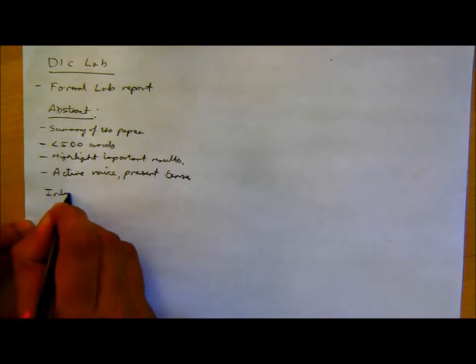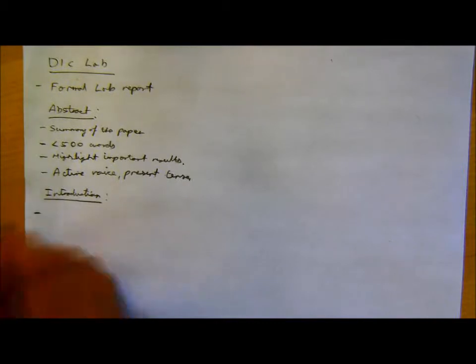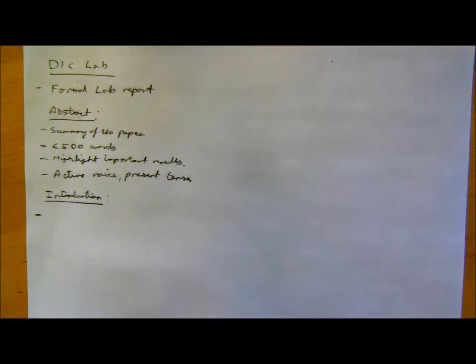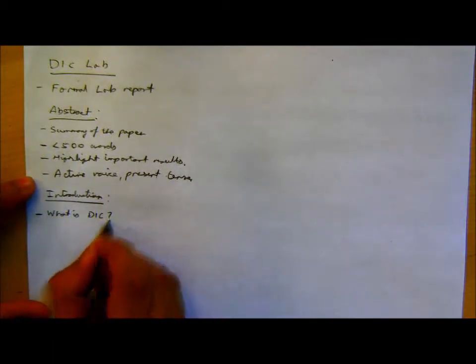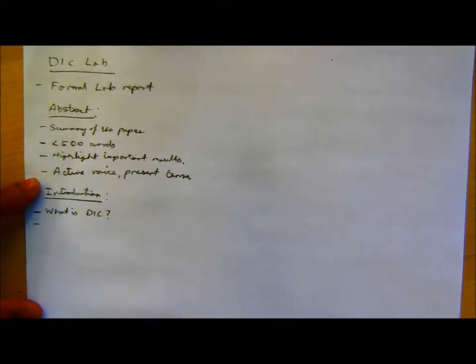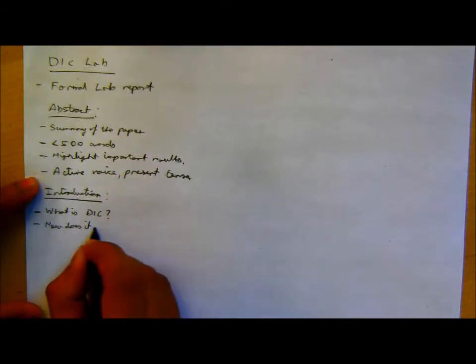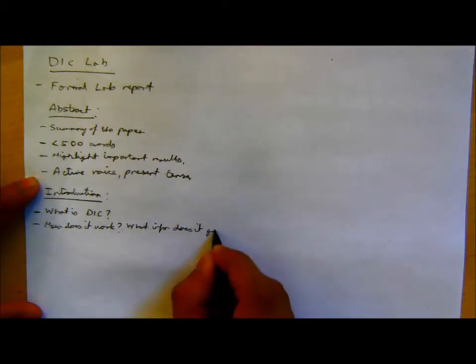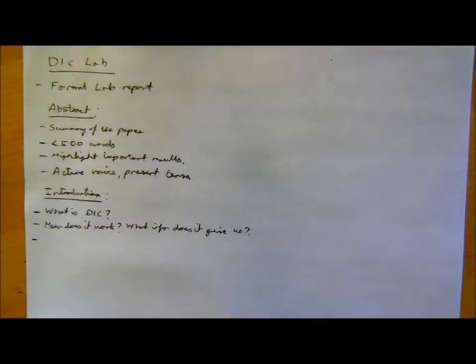Introduction. So there are three or four specific things we are looking for in the introduction. First is just introduce the technique that you're using. What is DIC? Then explain what the technique is, what all information it can give us, what do we get from the experiment? What physical quantities can we actually measure using DIC? Also, how is DIC different from those techniques like strain gauges? Or how is DIC better than those techniques?